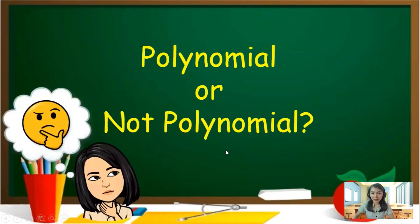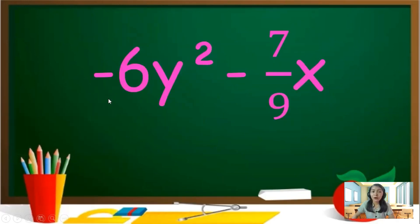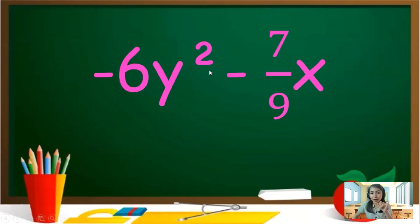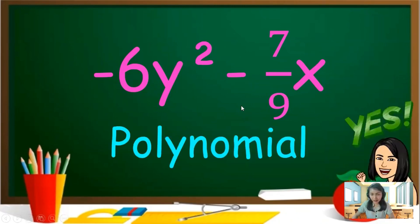Now, let us have an activity — you will identify if the given is a polynomial or not polynomial. First: negative 6y squared minus 7 over 9x. Checking the five rules: no radical sign on variable, exponent is not a variable, not negative, not a fraction, and the denominator contains no variable. It didn't break the rules of polynomials. It is considered a polynomial.